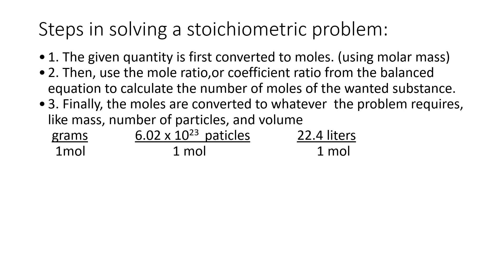Steps in solving a stoichiometric problem. Step 1: the given is first converted to moles using molar mass. Then, use the mole ratio or coefficient ratio from the balanced equation to calculate the number of moles of the wanted substance. Then finally, the moles are converted to whatever the problem requires — mass in grams, number of particles using Avogadro's number, or volume.